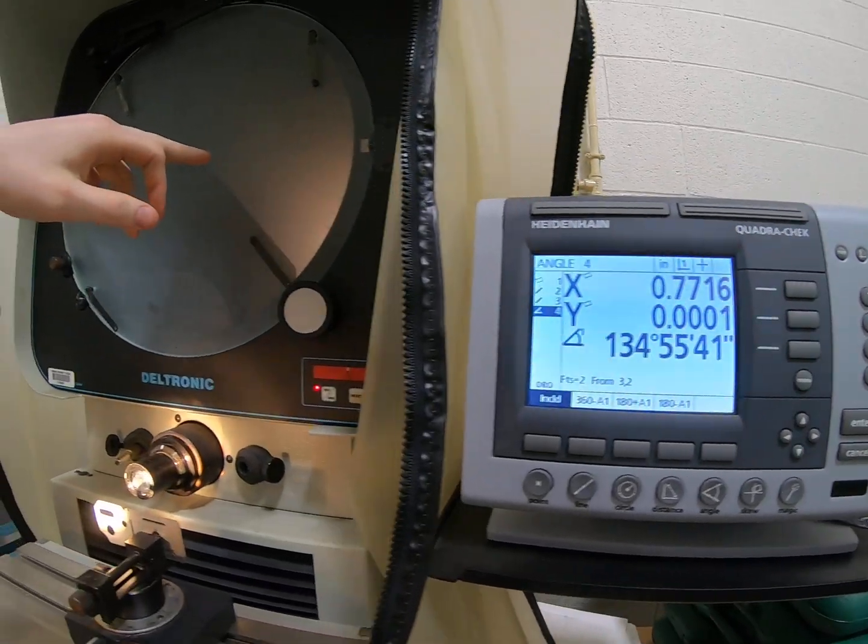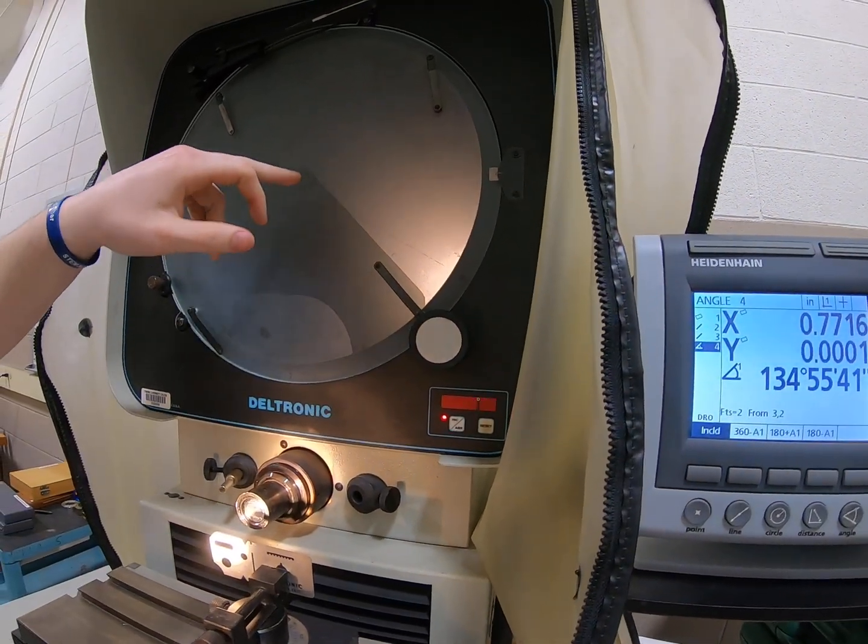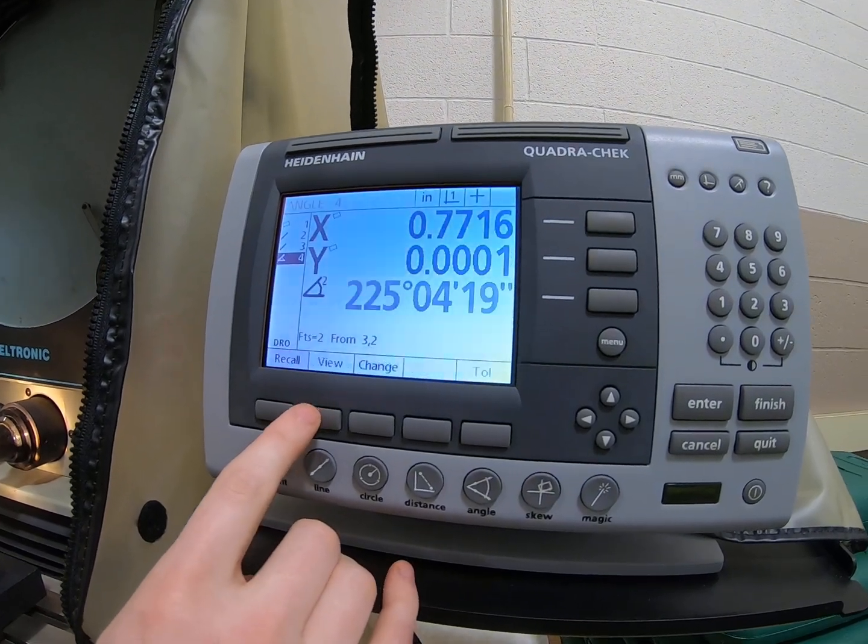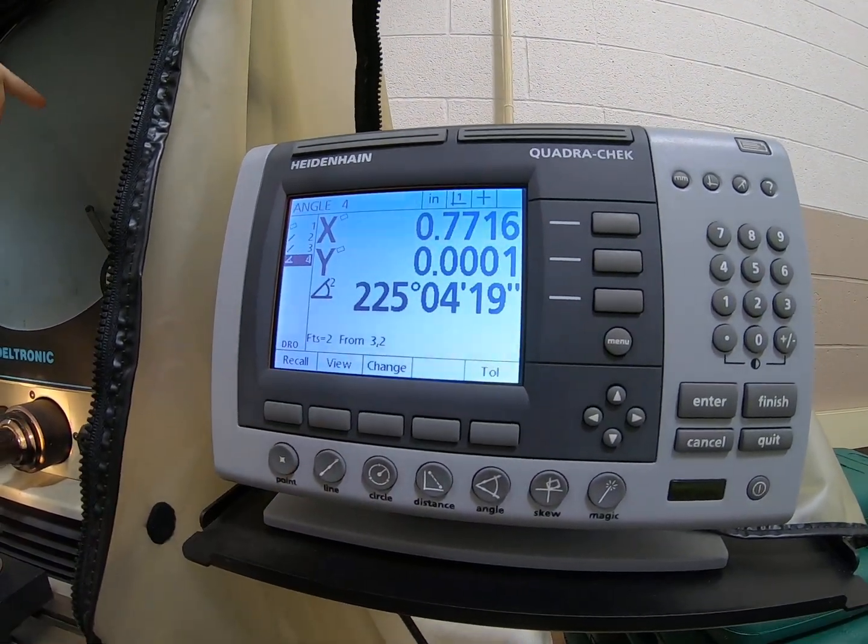So if you wanted to get the outside angle, instead of getting the inside angle from what you got, you would just click 360 minus that, and then that would give you the other angle.